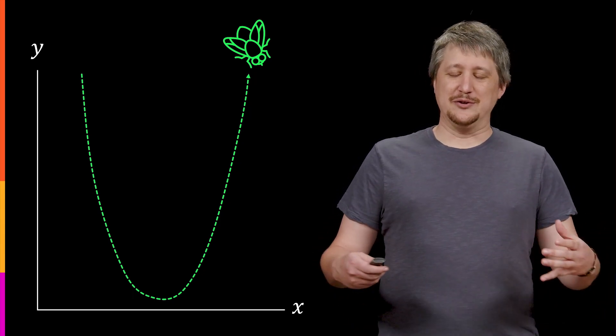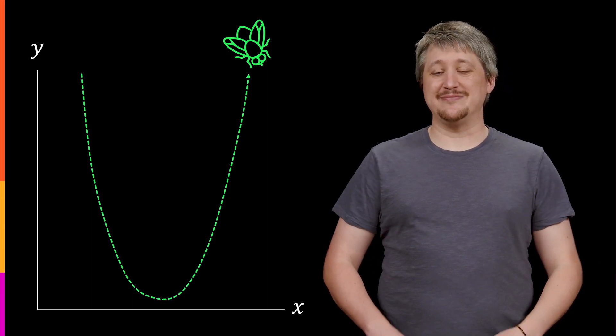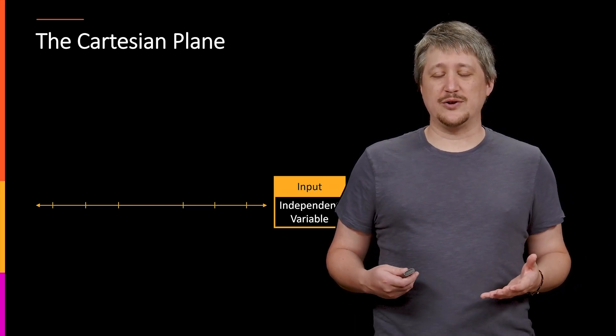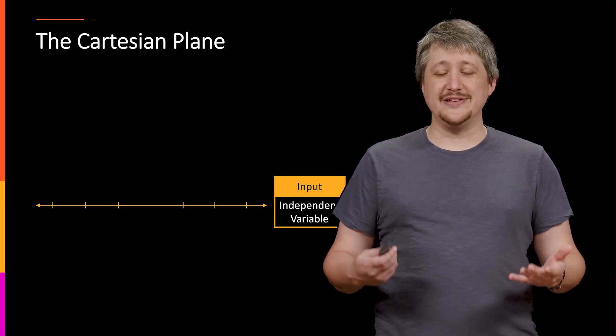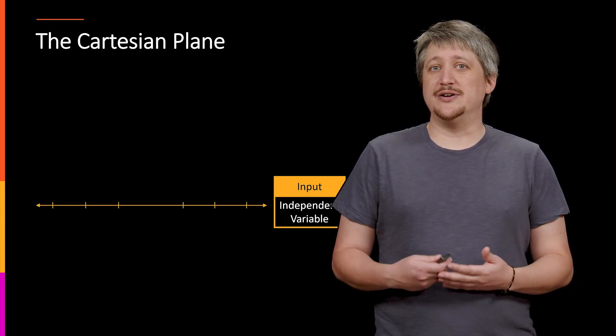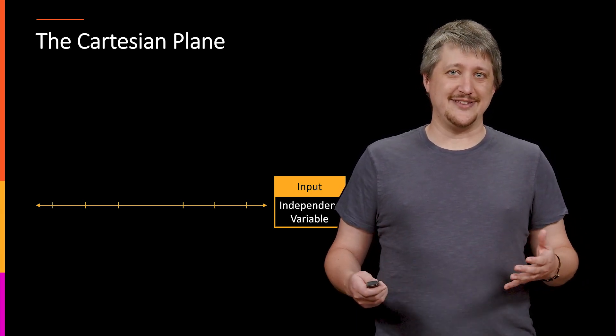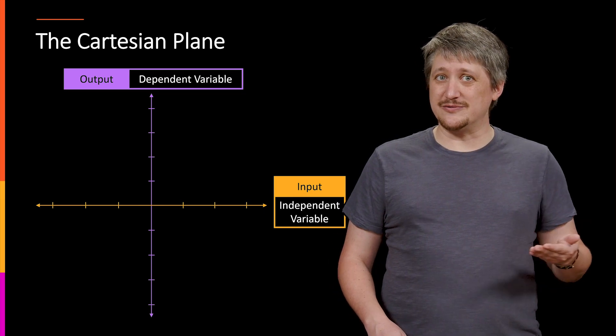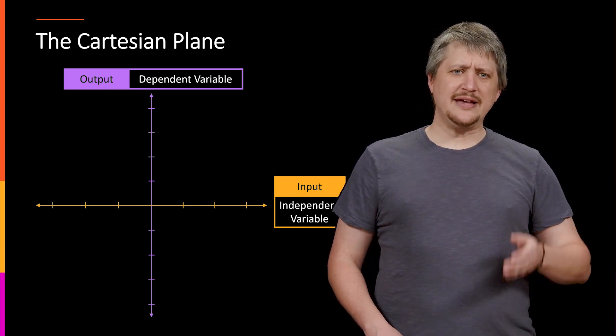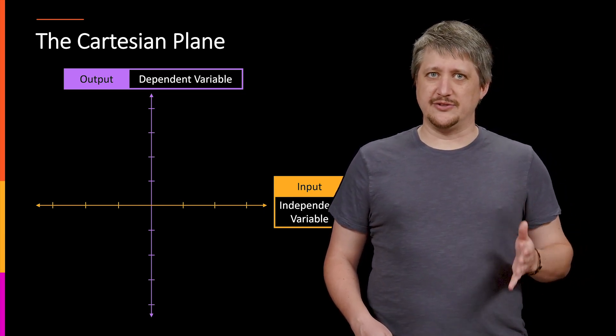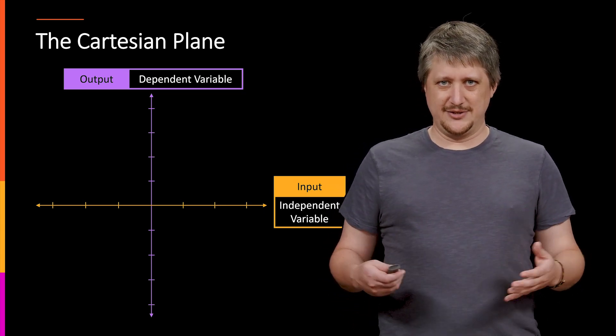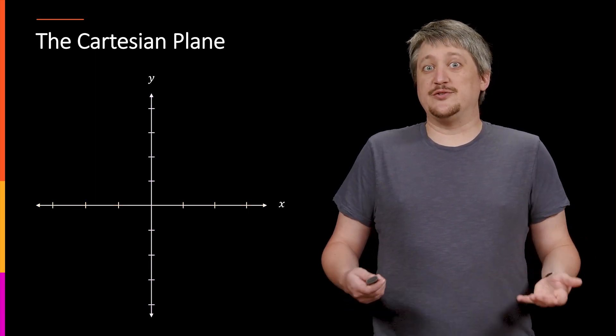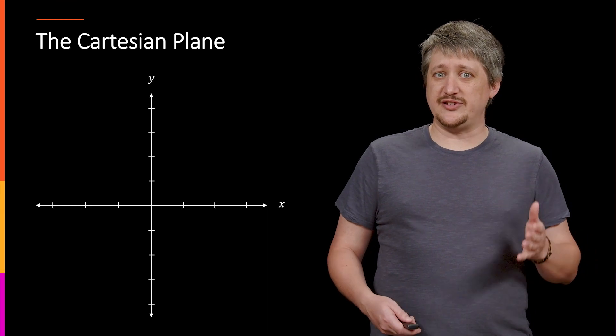So to the math. The Cartesian plane is this way of looking at input and output variables. So what we would commonly say X and Y, but as we've discussed, that's not always the case. They could be different letters or whatnot. So we have the independent variable as this horizontal line and the output or the dependent variable is the vertical line. And for the sake of everybody's sanity, I'm going to refer to these as the X and Y axis. But again, these are placeholders. The important part is it's the independent versus dependent.